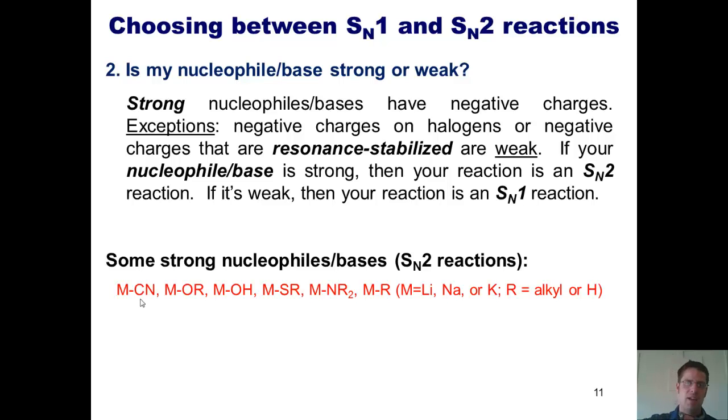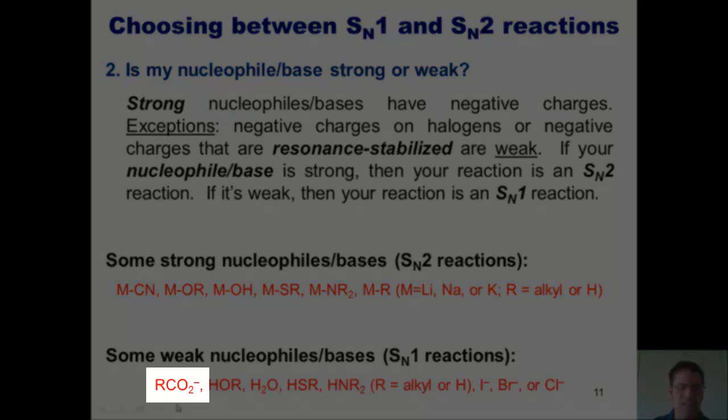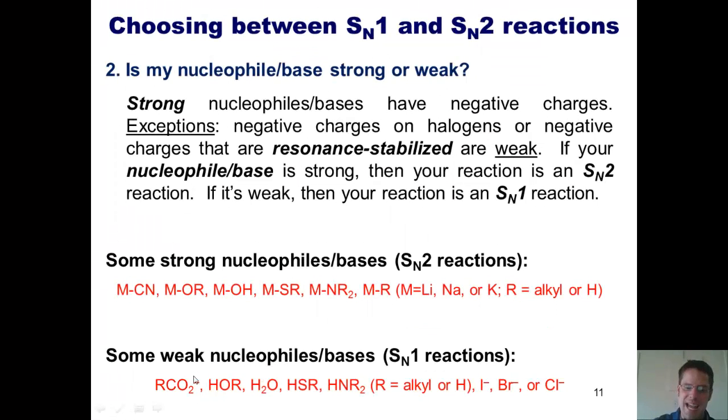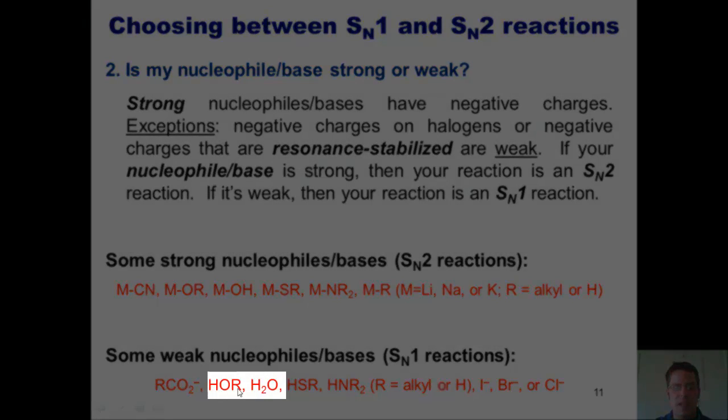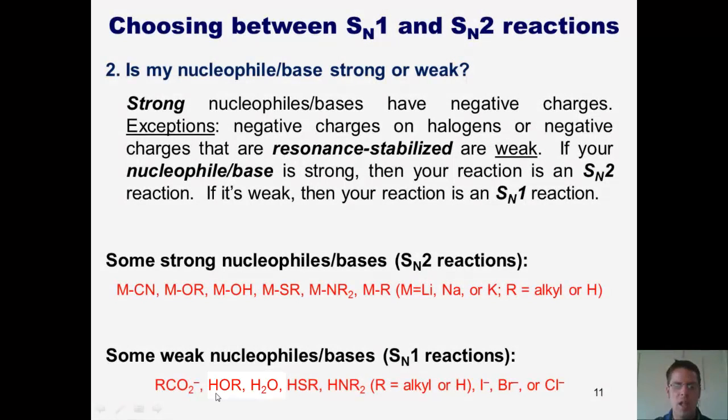Here are a few examples of weak nucleophiles. Imagine I have a molecule like this. This is called a carboxylate. An example of this would be acetic acid that we talked about in our last lecture. If you draw the Lewis structure out for this molecule, you will see that there's a negative charge on an oxygen and that it's resonance delocalized into another oxygen, so that negative charge is being shared by two oxygens and is therefore not very reactive and is weak. If I've got a molecule like this, an alcohol or water, I don't have any negative charges at all. All I have is lone pairs.